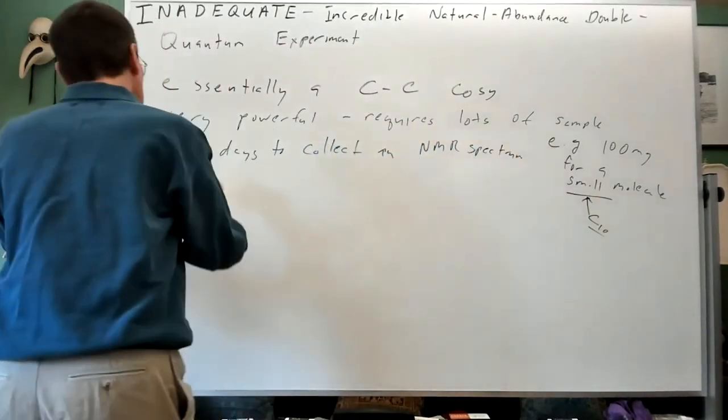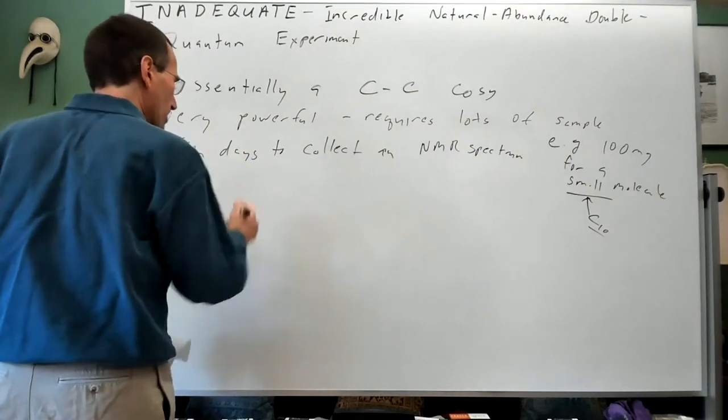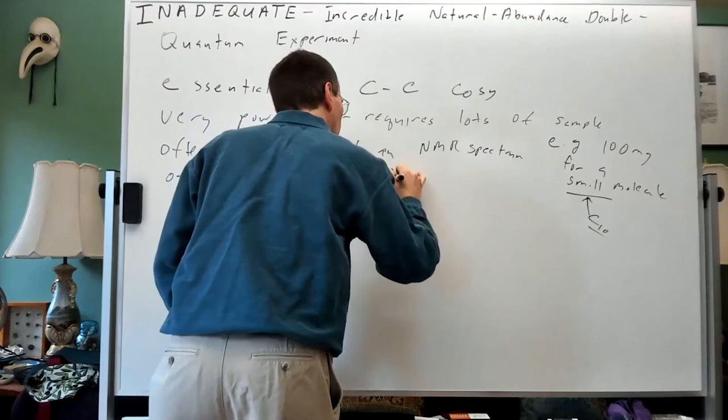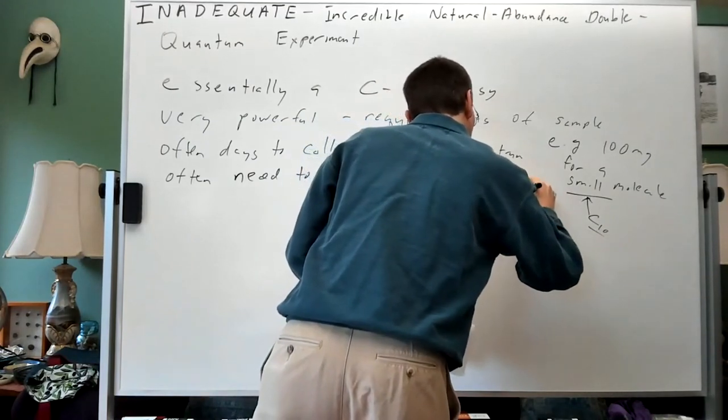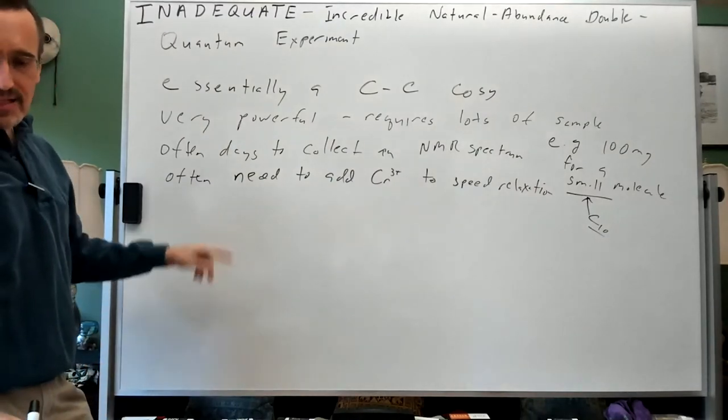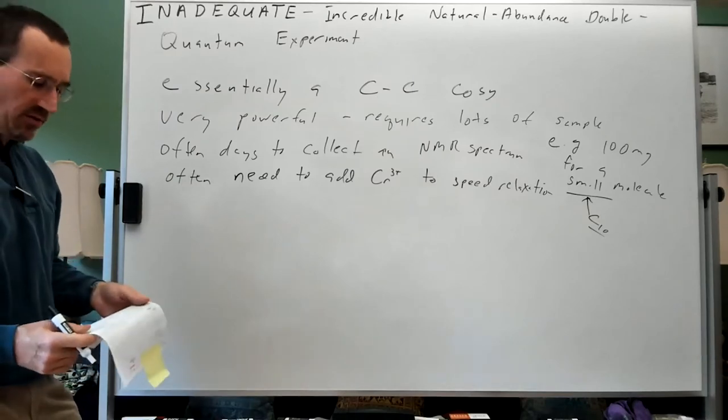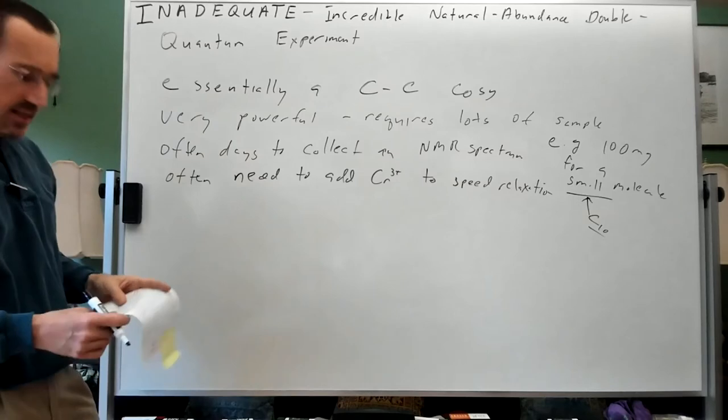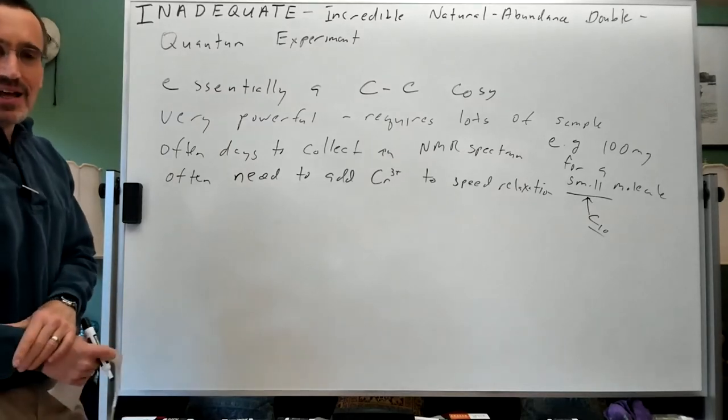You need to contaminate your sample, so often you need to add something like chromium-3 acetylacetonate. Basically relaxation allows the magnetization to return to the z-axis, and with carbons particularly quaternaries it can take 10 seconds or thereabouts for the relaxation time.